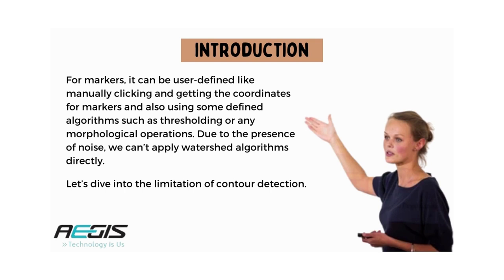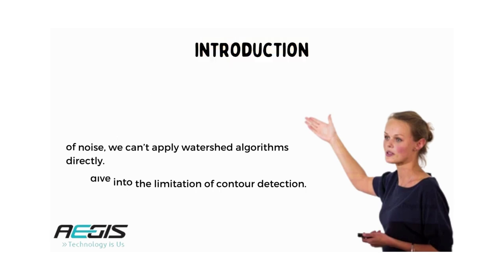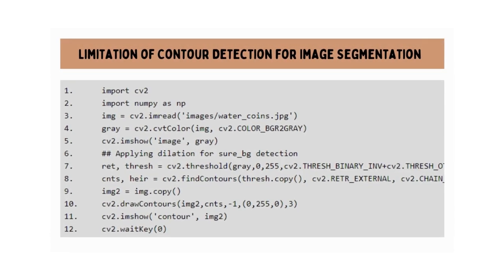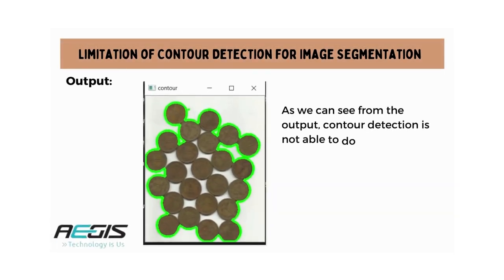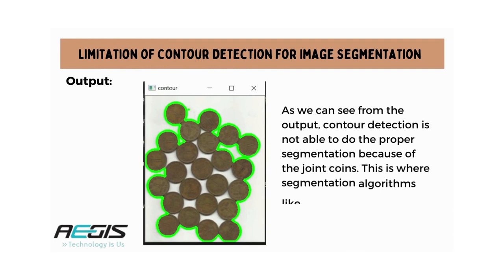Due to the presence of noise, we can't apply the watershed algorithm directly. Let's dive into the limitation of contour detection. With the image code implementation, you can get results about the limitation of contour detection for image segmentation. As we can see from the output, contour detection is not able to do proper segmentation because of joined contours. This is where segmentation algorithms like watershed come into picture.